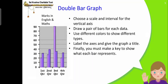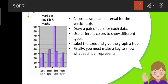Double bar graph. This is another type of a bar graph where you use two bars or a pair of bars for each data. Let's take an example here. Marks in English and Maths - you are representing English and Maths marks. Here the first one represents English and the second graph represents Maths. This color represents English.